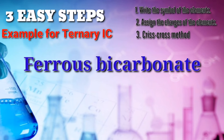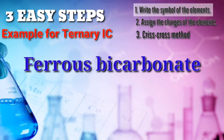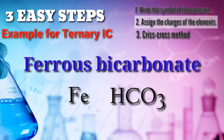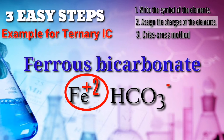Let's have our next example. We have ferrous bicarbonate. Let's follow our steps. First step: write the symbol of the elements. Ferrous is iron, and bicarbonate is HCO3. If you're not familiar with the symbols and signs, kindly refer to your periodic table. Now, let's have step 2: assign the charges of the elements. Ferrous — take note it uses the suffix OUS, and OUS means positive 2, the lowest oxidation number of iron.